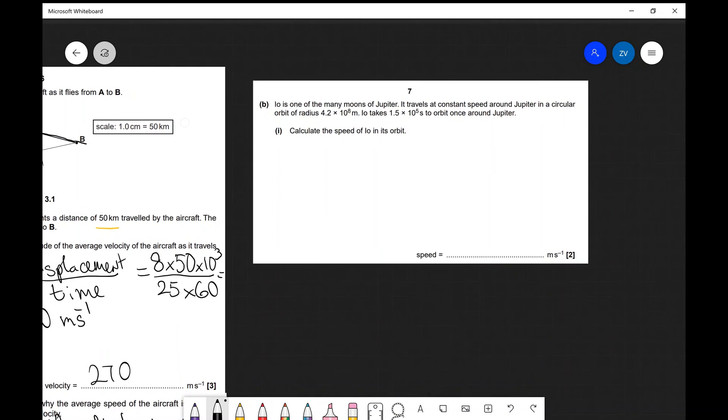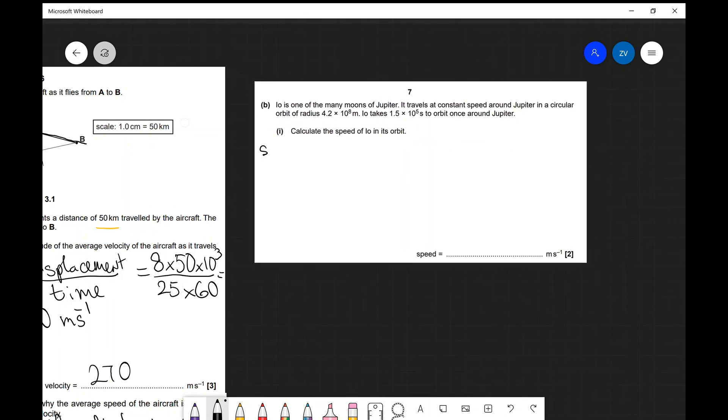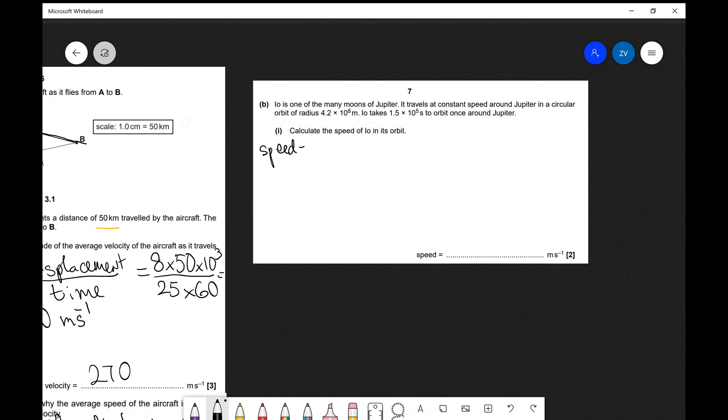So let's have a look for part b. Io is one of the many moons of Jupiter. It travels at a constant speed around Jupiter in a circular radius 4.2 times 10 to the 8 and we have the orbital period as well which is 1.5 times 10 to the 5 seconds. Calculate the speed of Io in orbit.